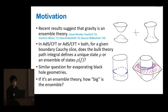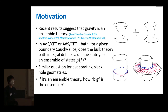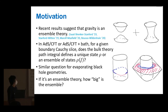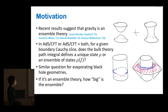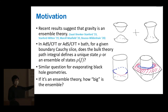The motivation is that we know in recent years there are results that suggest that gravity is an ensemble theory, which means that when you try to think about mapping from gravity to quantum mechanics, it may not be a pure state — a geometry corresponding to a state — but it may be an ensemble of states. The question I mainly want to talk about is: how big is that ensemble? More precisely, if I think about an ensemble gravity, it seems to suggest that either in AdS-CFT or AdS-CFT plus bath, for a given Cauchy surface that defines a state — the question is whether that state in the bulk defined by the Cauchy surface on a boundary defines a family of states, an ensemble of states, or a unique state.